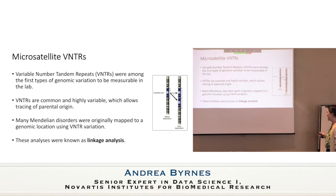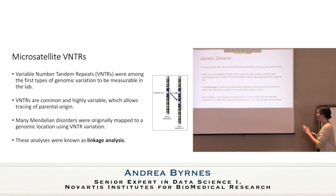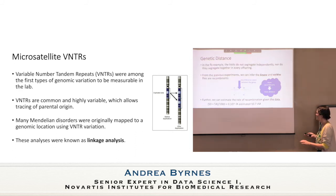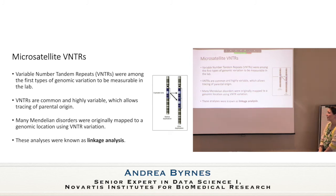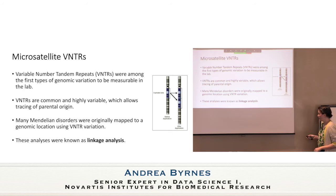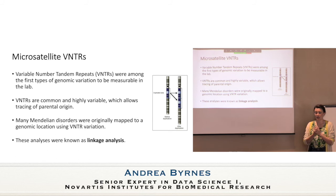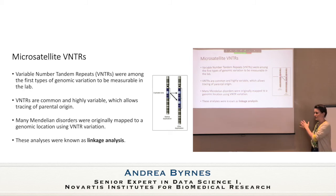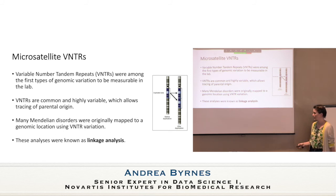Variable number tandem repeats — VNTRs. These were still in use less than 20 years ago, even if not cutting edge. They are common and highly variable, which allows tracing parental origin. Someone might have 20 repeats of a small sequence, another might have 10, seven, or three. They're reasonably reliably inherited, so inferring who people's parents are is immediately obvious. The question of what's the difference between a VNTR and a CNV: VNTRs are technically CNVs, but a very small subset — they need to be super variable. CNVs sometimes differ by just one versus two copies, whereas VNTRs can range from a few to many repeats.